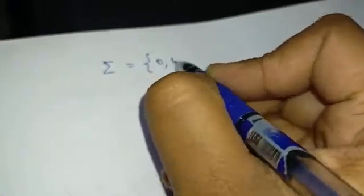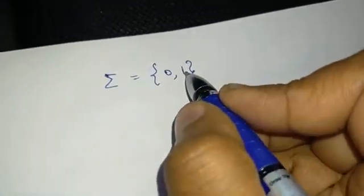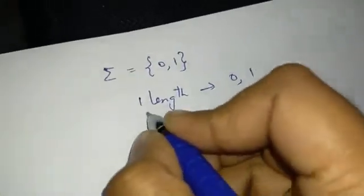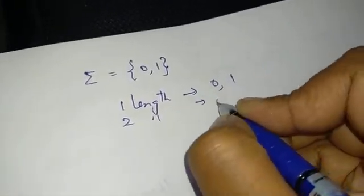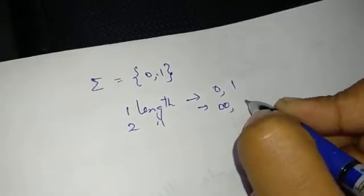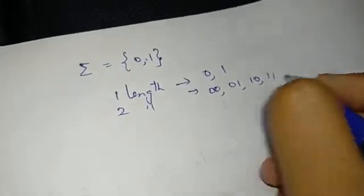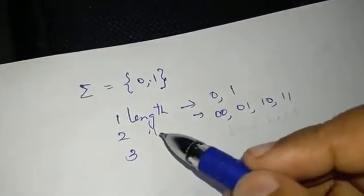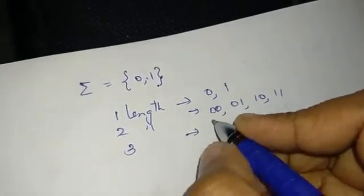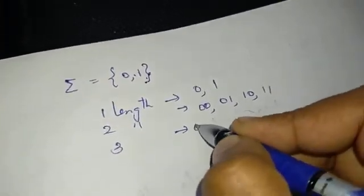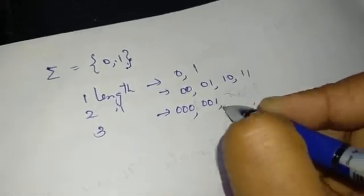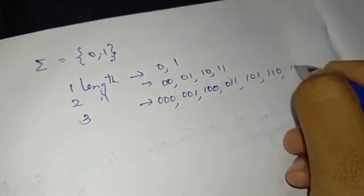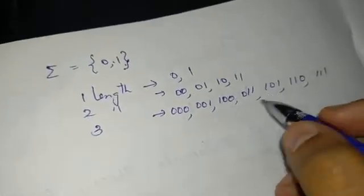With alphabet {0,1}, 1-length strings are 0 and 1. 2-length strings include 0-0, 0-1, 1-0, 1-1. 3-length strings include 0-0-0, 0-0-1, 0-1-0, 0-1-1, 1-0-0, 1-0-1, 1-1-0, 1-1-1, and so on. If you generalize, this is an n-length string.